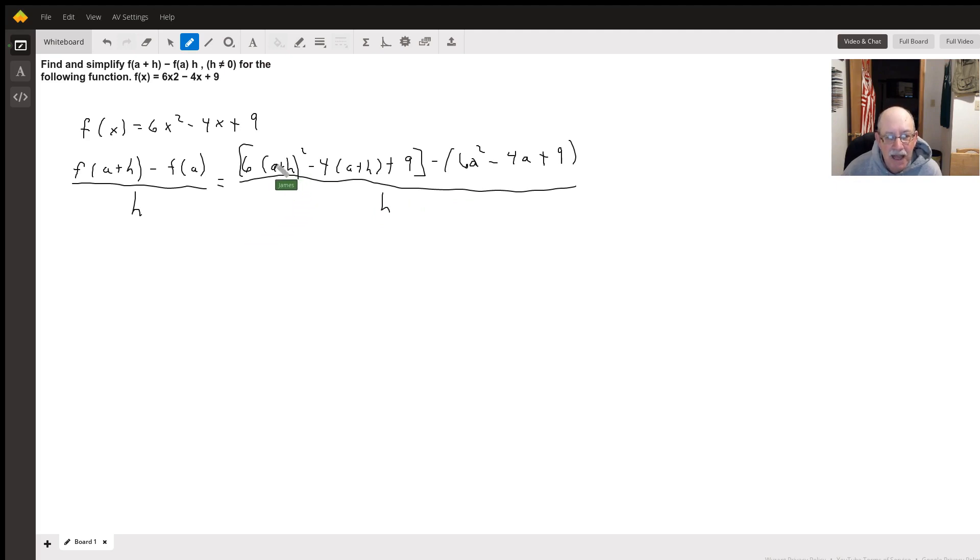So when we multiply the a plus h part out, we're going to get 6 times: a plus h squared is going to be a squared plus 2ah plus h squared, minus 4a minus 4h plus 9.